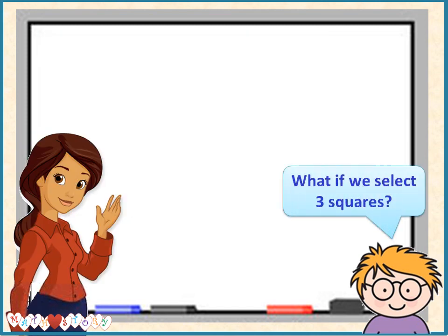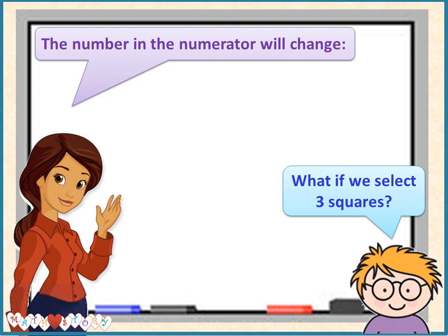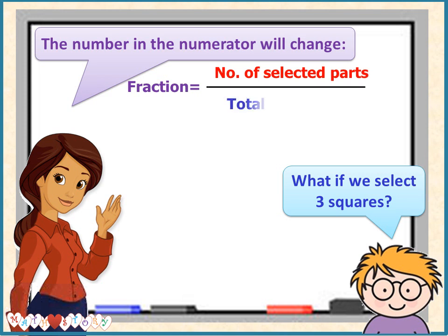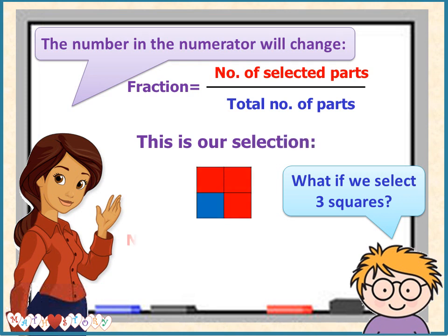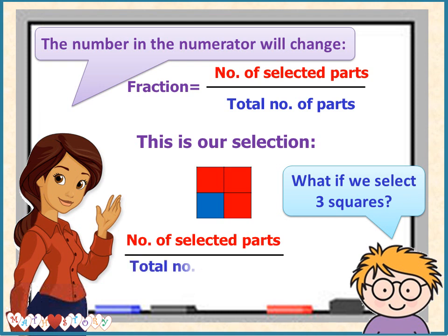In our example, number of selected parts over total number of parts equals one over four, or a quarter. What if we select three squares? The number in the numerator will change. Number of selected parts over total number of parts equals three over four, or three quarters.